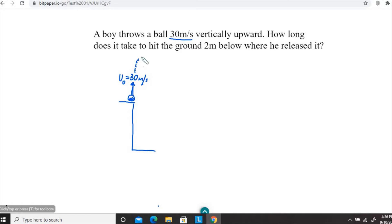V naught equals 30 meters per second. The ball goes up, reaches its maximum height, and then it's going to vertically fall down.